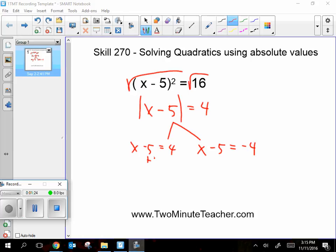And then I solve my two equations. Add 5 to both sides, x equals 9. Add 5 to both sides, x equals 1. So 1 and 9 are the two answers that you'd get.